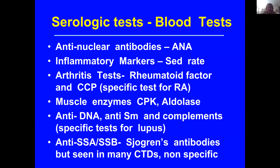We all know about these different serologic blood tests that doctors use to try to sort out what exactly is going on. The ANA is one of the most important tests in our armamentarium of diagnostic tests, and it's important how the test is done. It should be an immunofluorescent test, so you can get both a pattern of the ANA — whether it's centromere, homogeneous, or speckled — as well as a titer, whether it's 1 to 80, 1 to 640, or 1 to 2500.